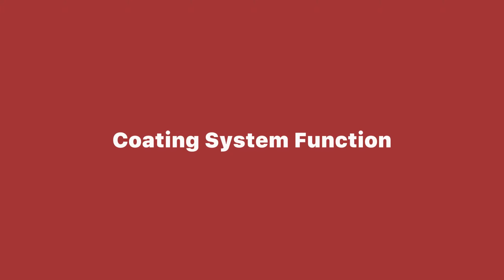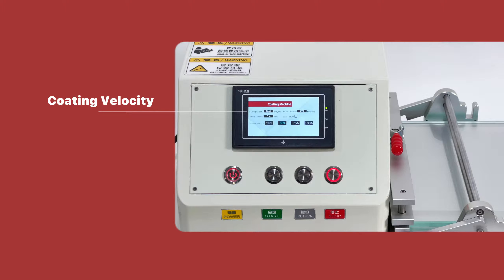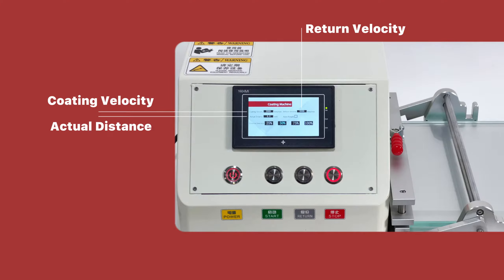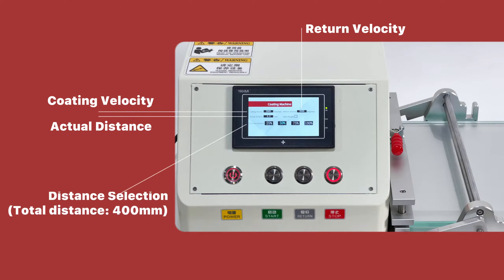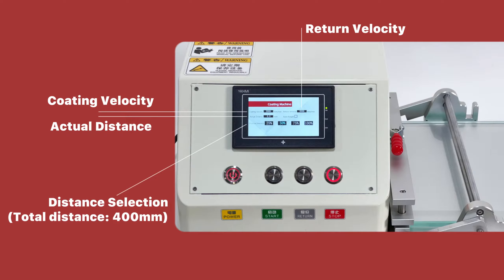The coding system interface displays key parameters: the coding velocity, return velocity, actual distance, and distance selection settings.